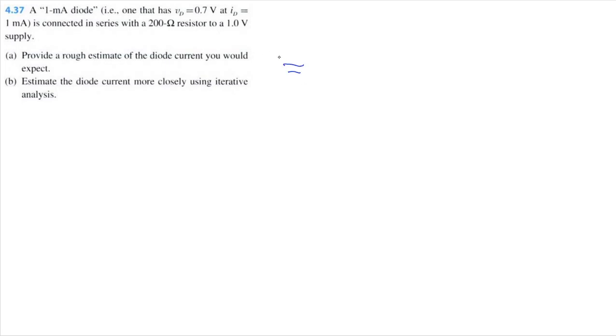First let's draw what this looks like. So we've got this 1 volt supply, a 200 ohm resistor, and the diode is connected in series. Where this is VD and ID.